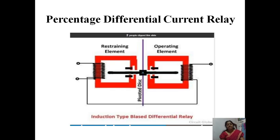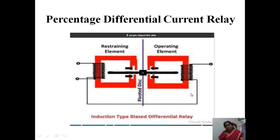In percentage differential protection, we have an operating coil or operating magnet and a restraining element. This restraining coil is divided into two halves. Here, an induction type bias differential relay is shown. You can see the restraining element and the operating element. If you consider the first terminal, second terminal, and third terminal — between the first and second, the coil is connected and given to the operating element. These windings on each side are equal.